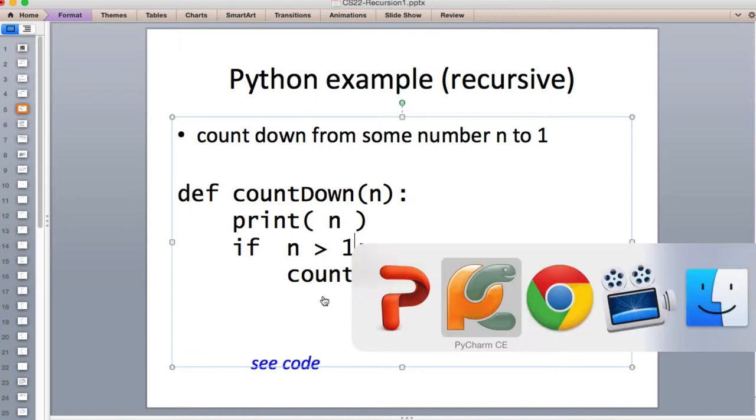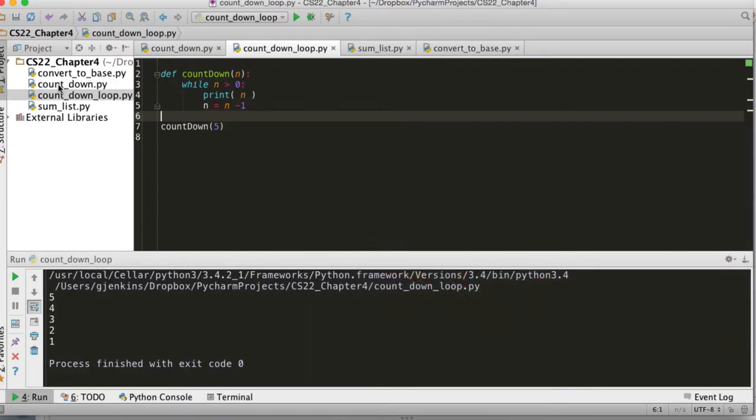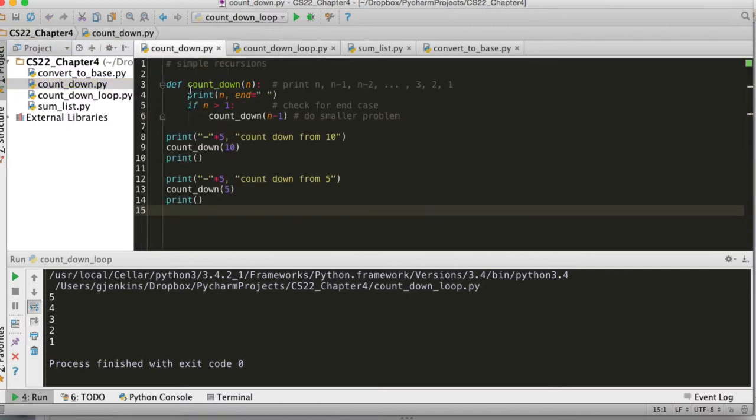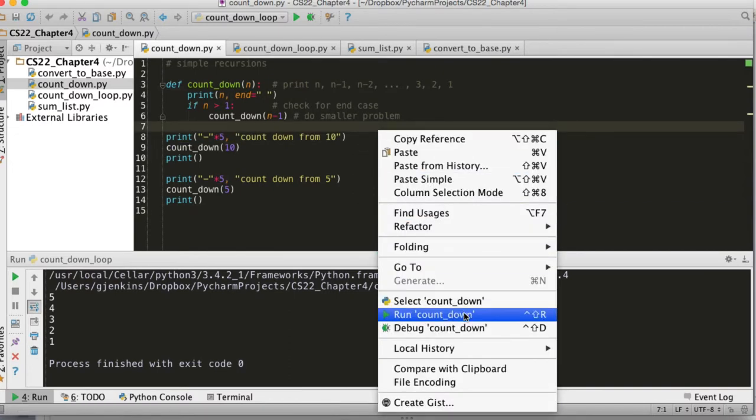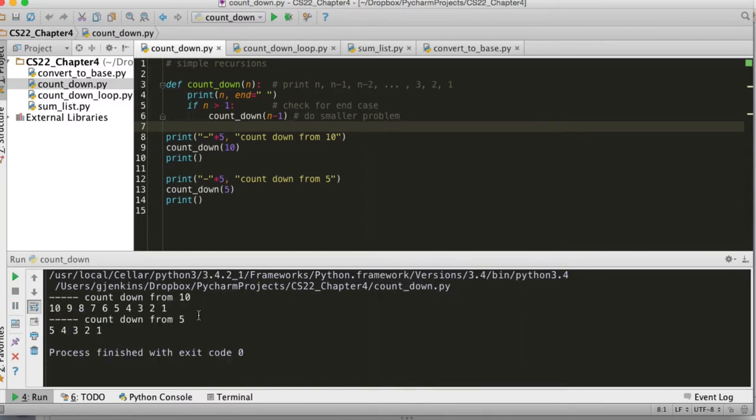Let's look at it run. Here's the recursive countdown, print n. I put a little code to put all the numbers on the same line. It's the only difference from the last version. It prints n, stays on the same line. If n is greater than 1, it calls countdown. If it just printed 1, 1 is not greater than 1. It won't call countdown again. It'll start returning. I have countdown of 10 and countdown from 5, and you see it works great.